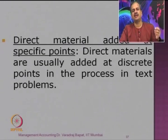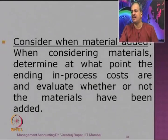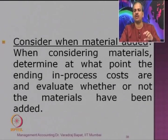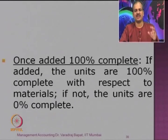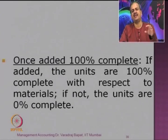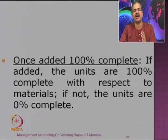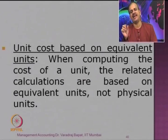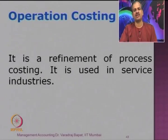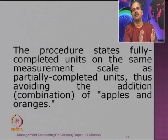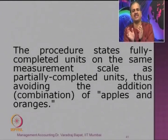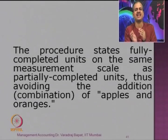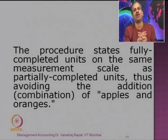To calculate unit cost based on equivalent units, we take the total cost and divide by equivalent units — not physical units. We take all fully finished units plus proportionate equivalent partly finished units as the total denominator to get a fair cost per unit. In the next session, we will look at cases on equivalent production.